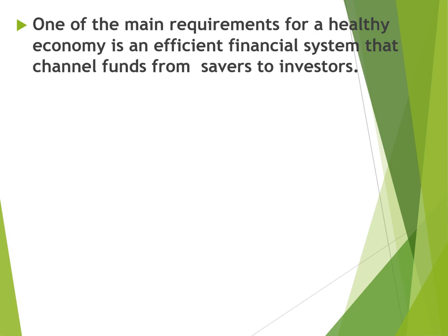In both forms — gold or property — these savings don't reach investors. When savings don't make it to investors, our financial structure cannot run smoothly. Pakistan has one of the lowest savings-to-GDP ratios, around 10%, which is very low. It should be about 20–25% for a healthy economy. Most of those savings are either wasted or stored in the form of jewelry or property, which are not productive forms of savings.